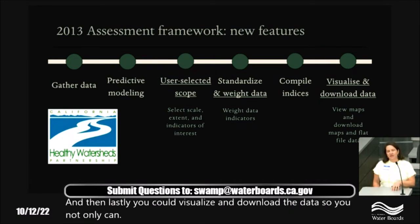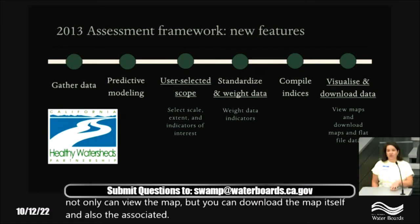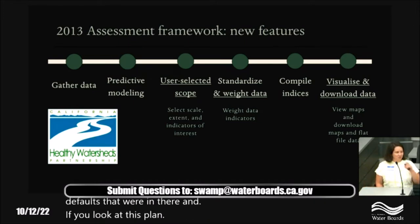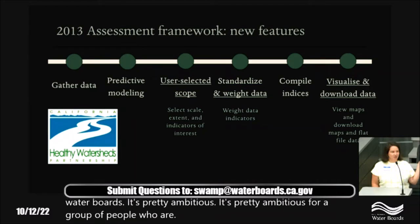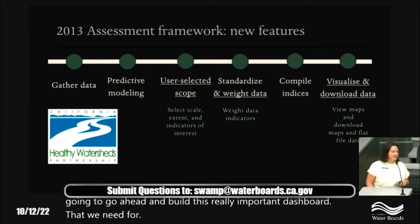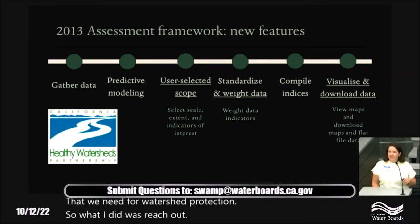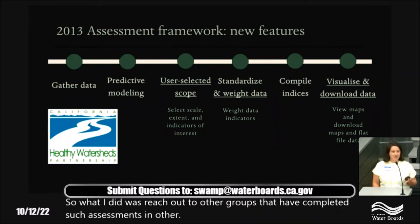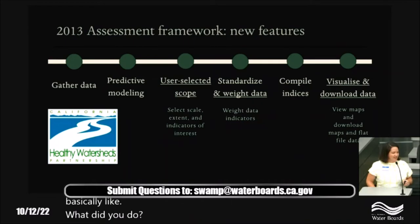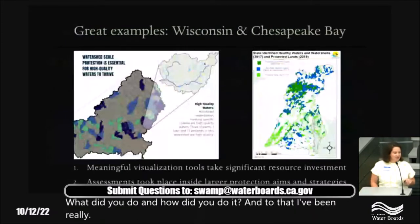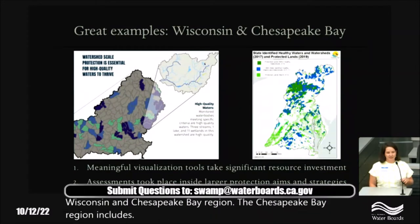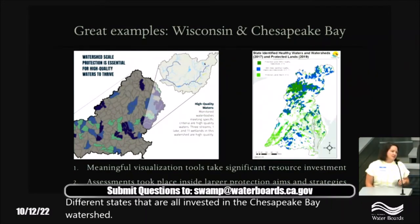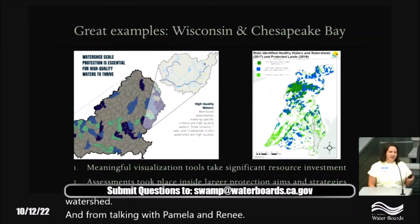This is a pretty ambitious plan for a group that is largely volunteers. So I reached out to other groups that have completed such assessments in other states or regions. Two that have been really inspirational are Wisconsin and the Chesapeake Bay region — which includes seven or eight different states all invested in the Chesapeake Bay watershed. From talking with Pamela and Renee, they were so generous with their time and we realized two things. First, these meaningful visualization tools take a lot of resource investment — they had multiple people working on tools simultaneously.